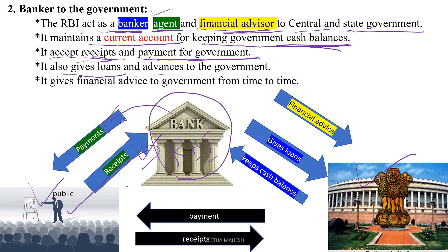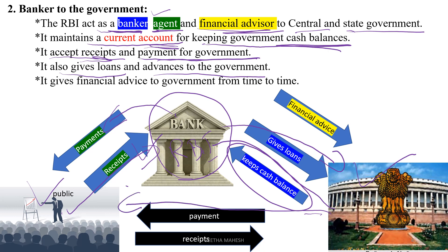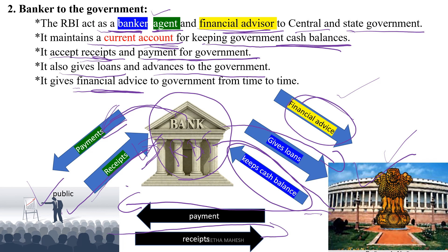RBI also gives loans and advances to the government as a banker. As it opens a current account, it keeps a cash balance and handles all payment transactions. Additionally, as a leader of the financial sector, RBI gives financial advice to the government on financial matters from time to time.